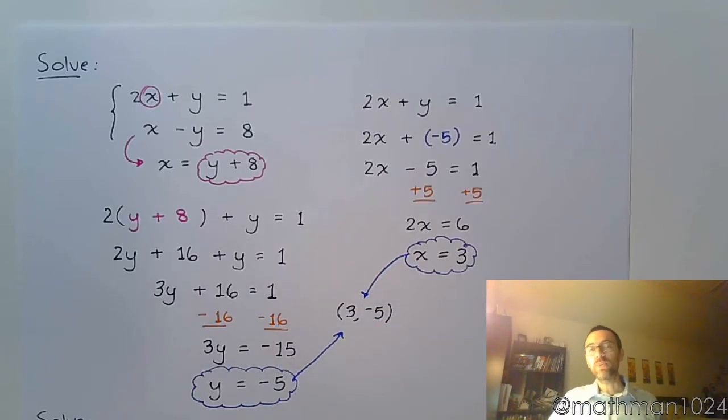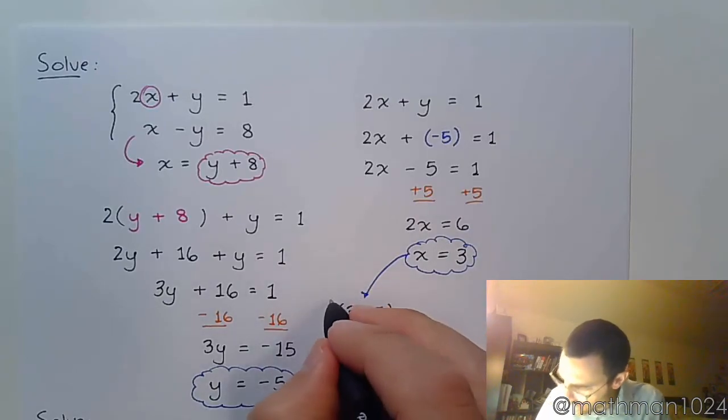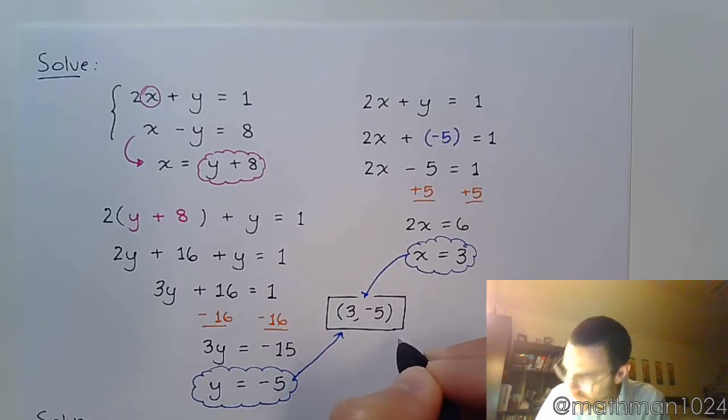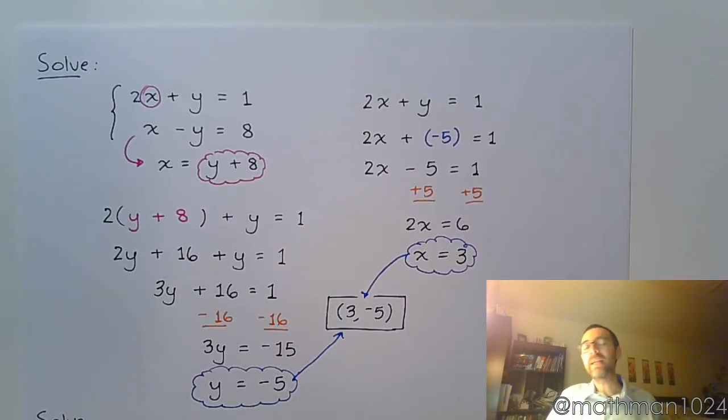Even though we found Y equals negative 5 first, when you do an ordered pair, it's going to go X, then Y. Now, what you always want to make sure that you do on a problem like this, you want to make sure that you check your work by plugging it into not just one equation, but plug it into both equations.